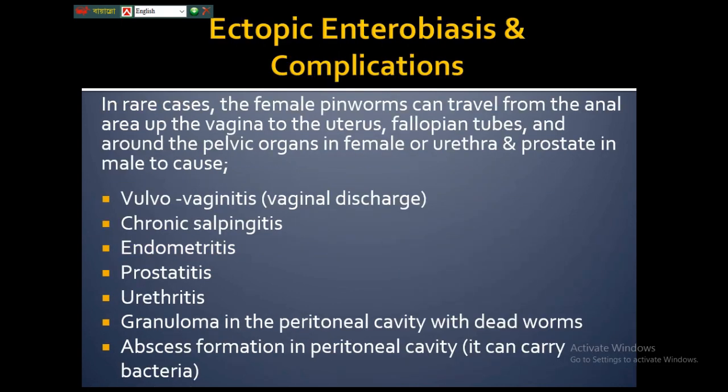Ectopic enterobiasis refers to the worm occurring in abnormal locations. Normally, Enterobius vermicularis remains in the large intestine and at most migrates to the perianal skin. However, in rare cases, the female pinworm can travel from the anal area up to the vagina and uterus in females, due to their close proximity.